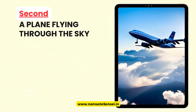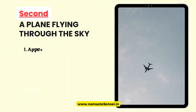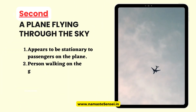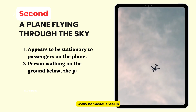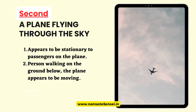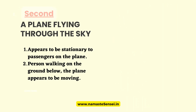Second, a plane flying through the sky. When a plane is flying in the air, it appears to be stationary to passengers on the plane. However, to a person walking on the ground below, the plane appears to be moving. This is an example of relative motion because the motion of the plane depends on the observer's perspective.